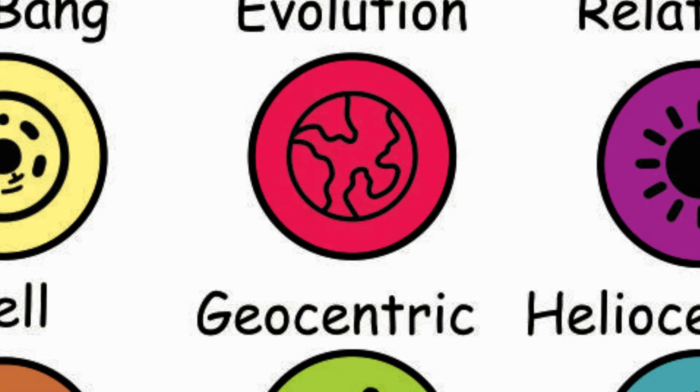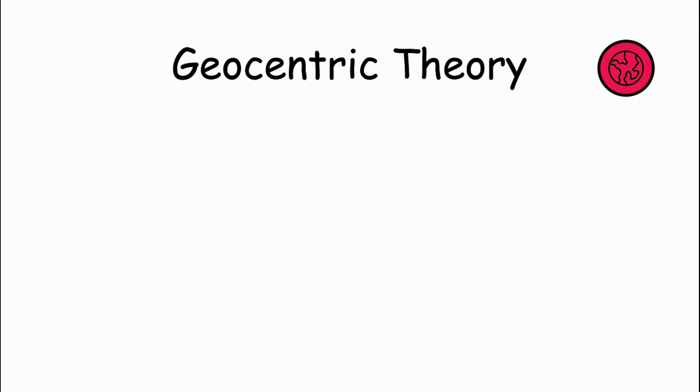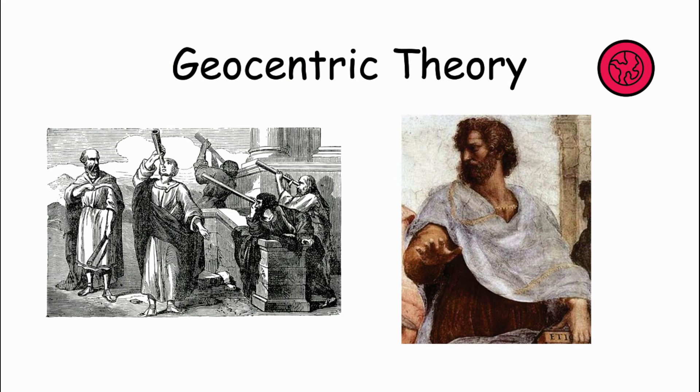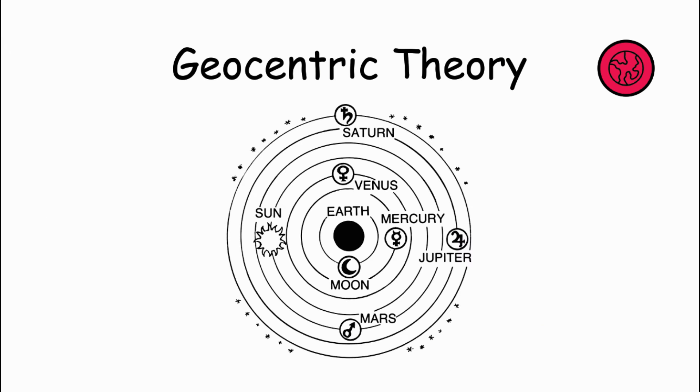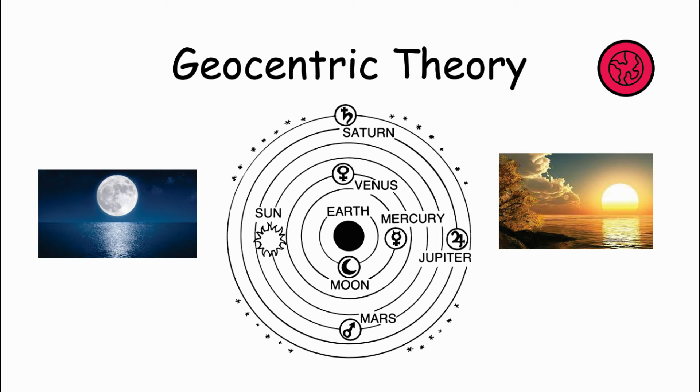Geocentric Theory: The geocentric theory was an ancient belief among astronomers such as Aristotle. According to this theory, many believed that Earth is situated at the center of the universe, with everything else, like the sun, moon, stars, and planets revolving around it. People used to believe that Earth was motionless while everything else is moving and rising.